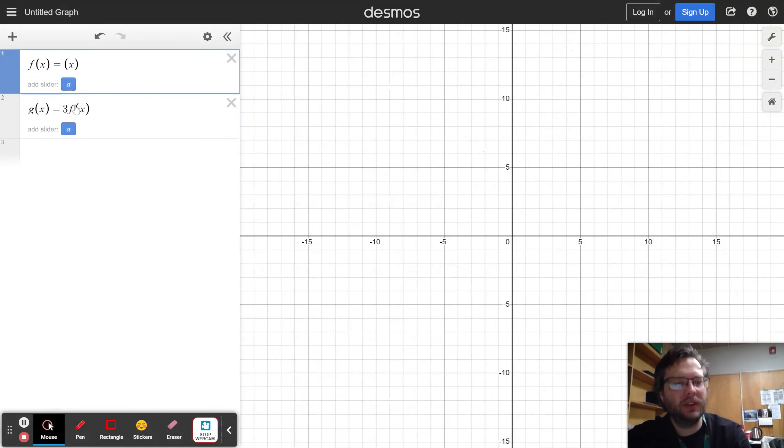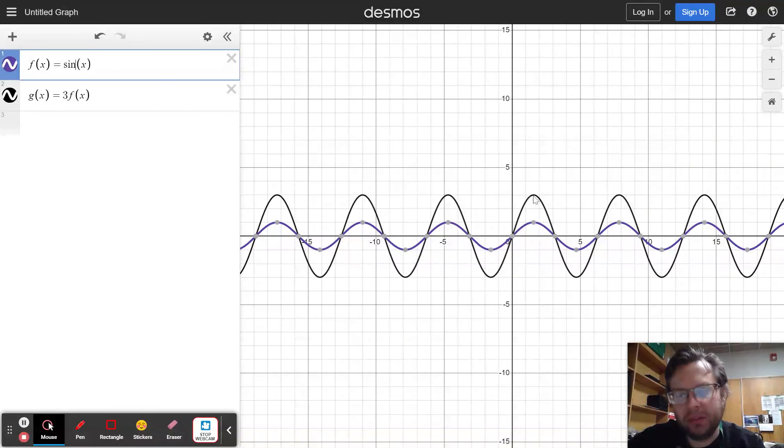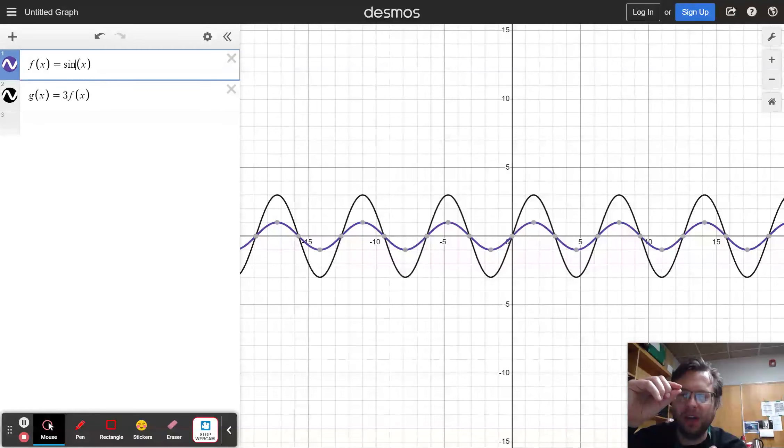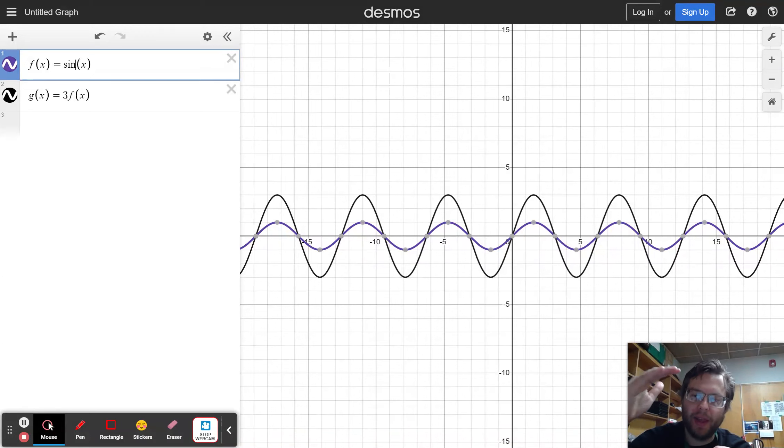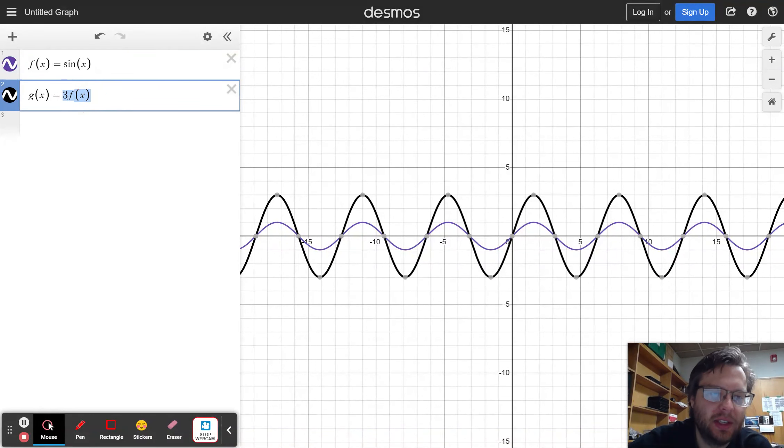If I change my parent graph to something else, you can see the same relationship. Every point on the black graph is 3 times taller than the purple graph. And when we use the word taller, we're actually meaning, more specifically, it is 3 times further away from the x-axis. The y-value of the black graph is the purple graph's y-value multiplied by 3. And in fact, that's exactly what the function tells us here. We take our old y-value, called f of x, and multiply it by 3.